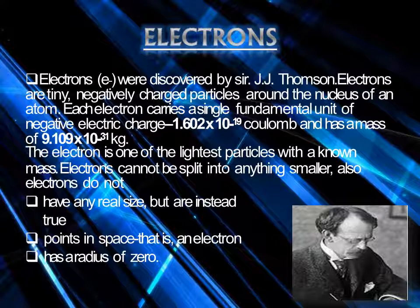Electrons do not have any real size but are true point particles. Their size can differ from one element to another — for example, in a hydrogen atom the electron may be smaller or bigger than in an oxygen atom. Electrons do not have a definite radius of zero, and this was all about electrons.